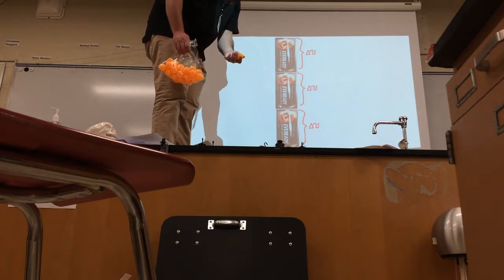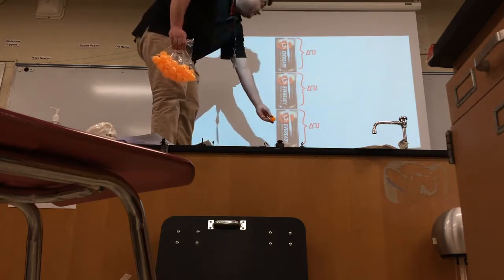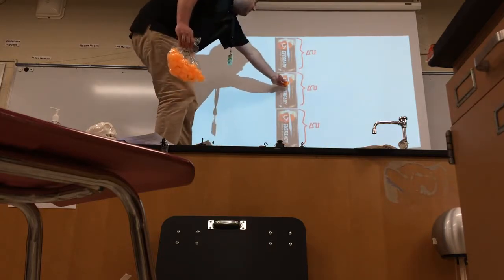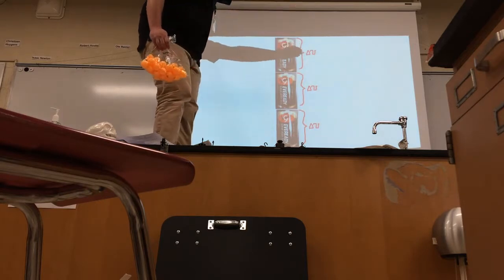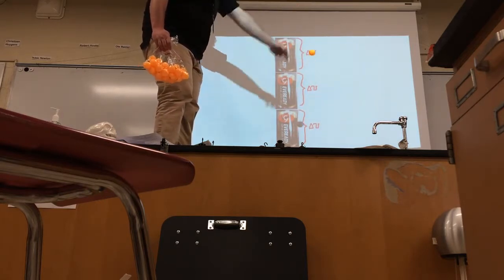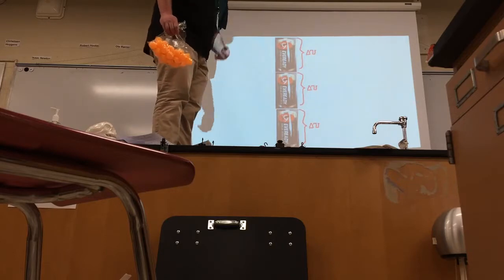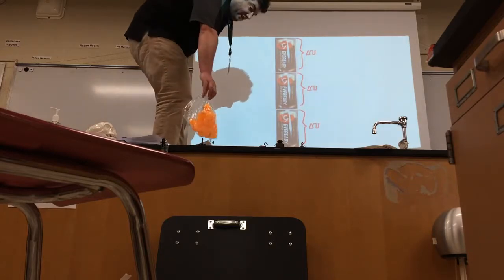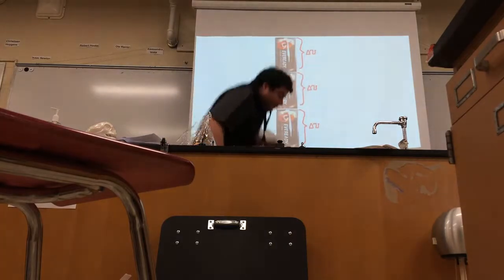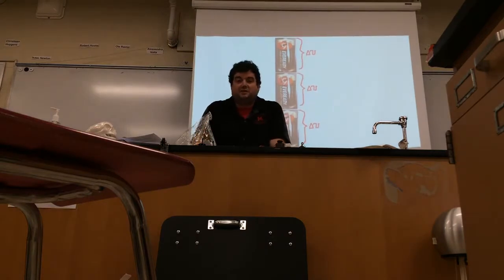So that would be 3 volts, 3 joules per coulomb. This coulomb, we're going to pump up all three. Now it has 4.5 joules per coulomb. So we can actually add potential energies together, potential energy per charge, to give our charges the potential energy we want.